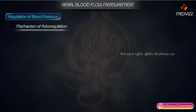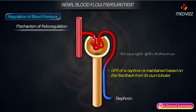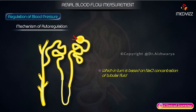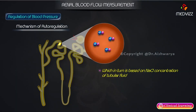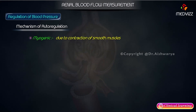Mechanism of autoregulation. Tubuloglomerular feedback by the juxtaglomerular apparatus: the GFR of a nephron is maintained based on feedback from its own tubules, which in turn is based on the sodium chloride concentration of tubular fluid, sensed by the macula densa cells of the distal tubule. Myogenic, due to contraction of smooth muscle.